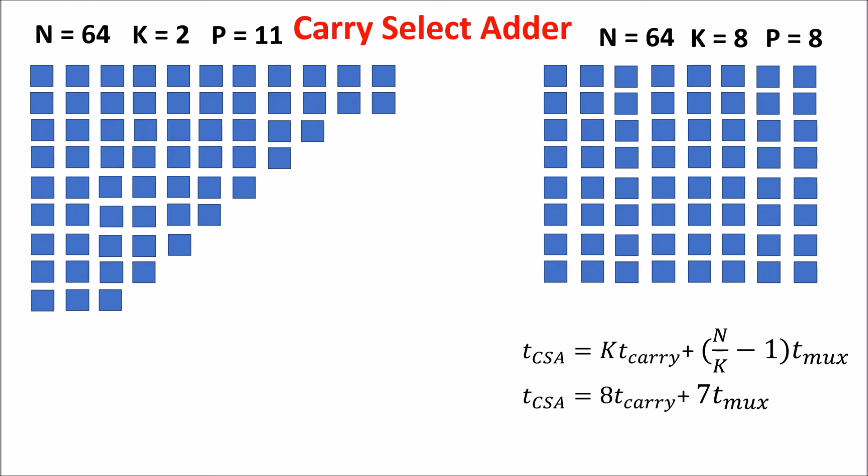On the left, we have the more efficient arrangement where, starting from blocks of two, we arrive to blocks of nine. We have a total of 11 blocks. The general formula is this one, and in the 64-bit case, this is the result.